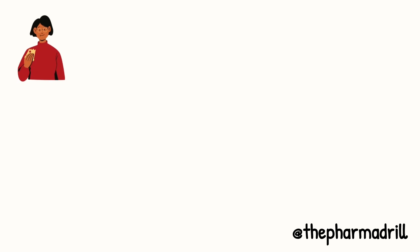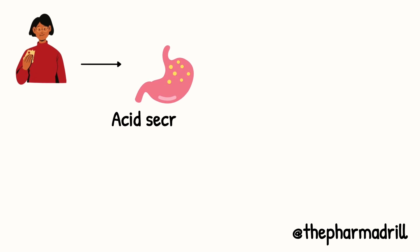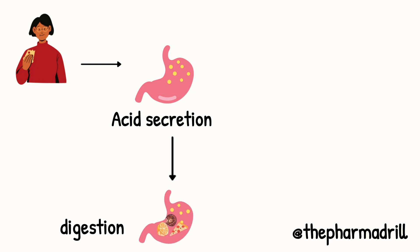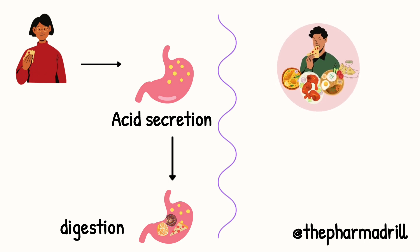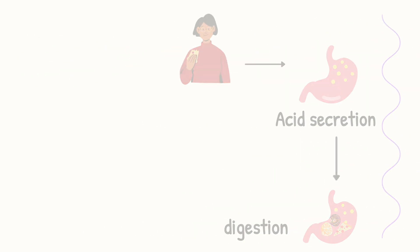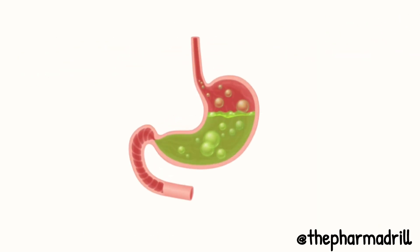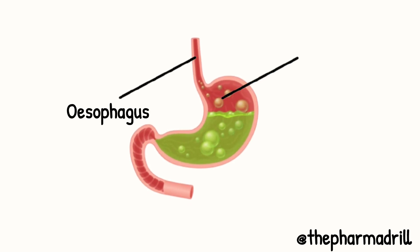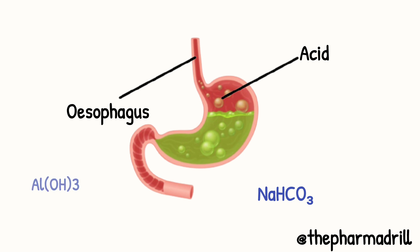Normally when we eat food, there is secretion of acid in the stomach, and this acid helps to digest the food. When a person eats a lot, there is excess secretion of acid in the stomach, due to which there is heartburn or a burning feeling in the lower chest. This burning sensation is due to the excess acid flowing back into the esophagus.